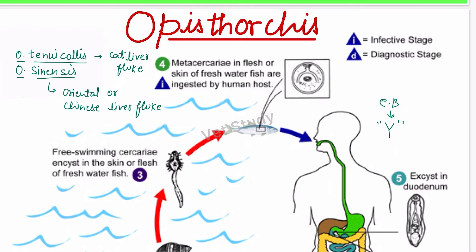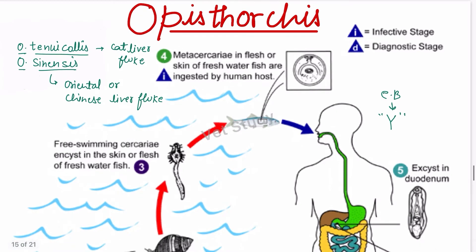The species affected include dog, cat, and humans, and sometimes wild mammals as well. The location of this parasite is the bile duct, gallbladder, and intestine — these are the sites where this parasite lodges and causes infection.